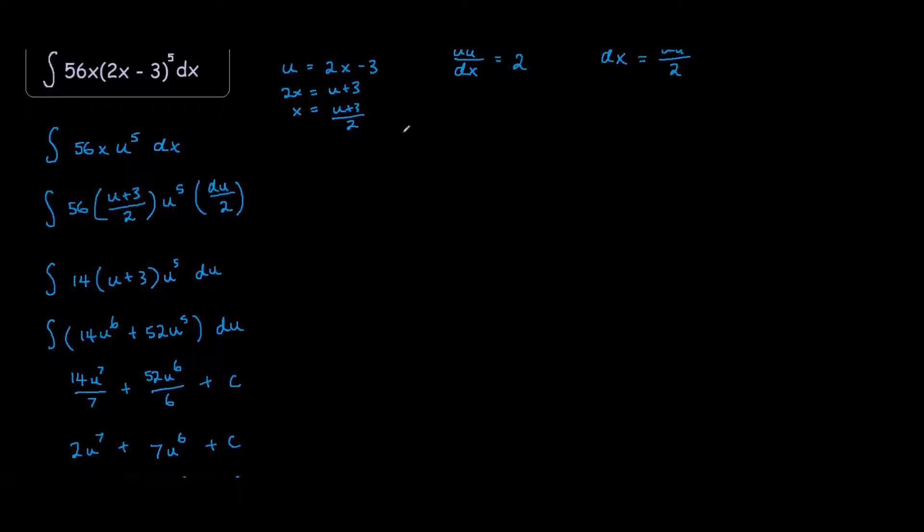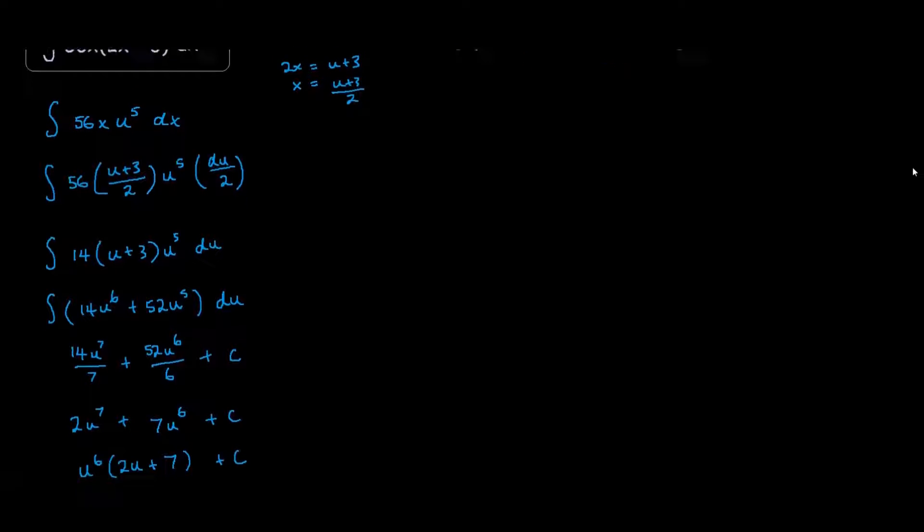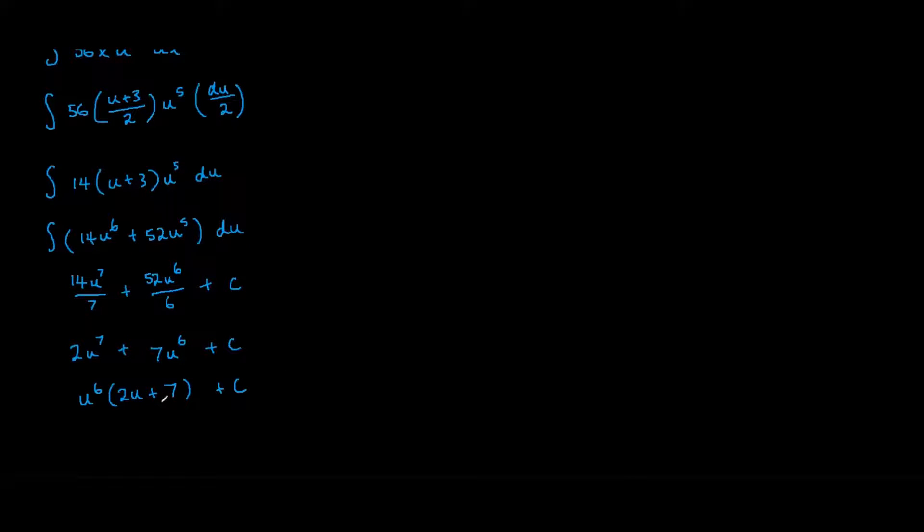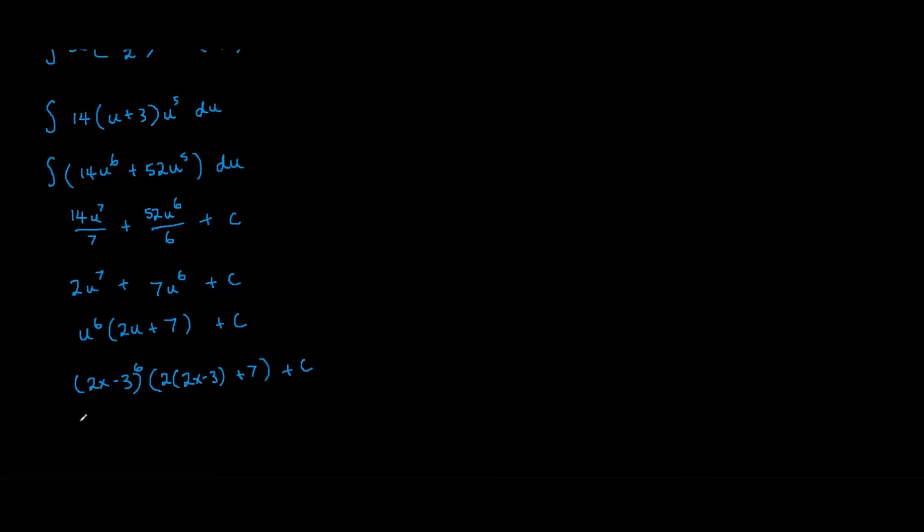Now recall that our u equals to 2x minus 3. So we now substitute this back into u over here. So we have 2x minus 3 to the power 6 times 2u. So we have 2x minus 3 plus 7 plus c. So we have 2x minus 3 to the power 6. Bracket 4x. 2 times 2x is 4x. So minus 6 plus 7 is plus 1. And plus some constant. And that's how it should look like at the end.